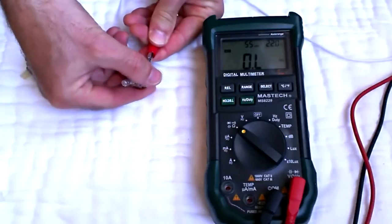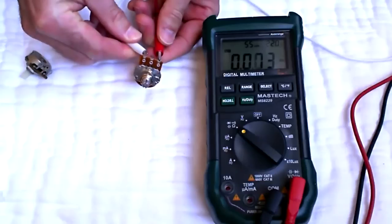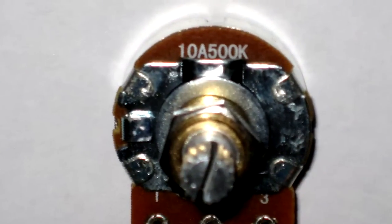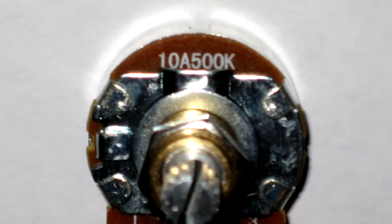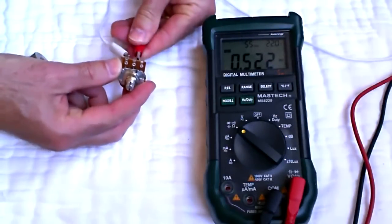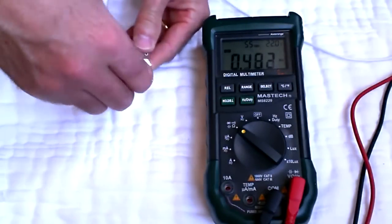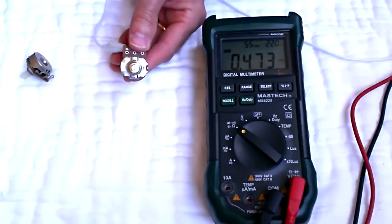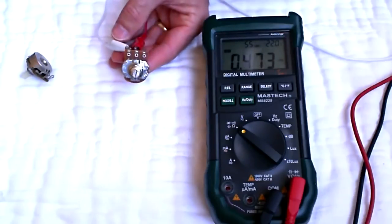For a logarithmic pot like this one, again, first check for the part number. This one actually says right on it A500k, so I know it's logarithmic. But if I didn't know that, I would measure the outer lugs again. See, it's 522k. And then measure from the side to the center and try to put it in the middle. And this one, as you can see, is nowhere near 250k, so it's obviously not linear.